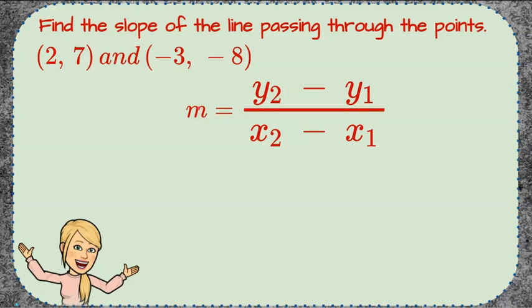Welcome back. So I'm going to show you a little trick. We're going to write down the two ordered pairs. Point one is the ordered pair (2, 7) and point two is going to be (-3, -8).